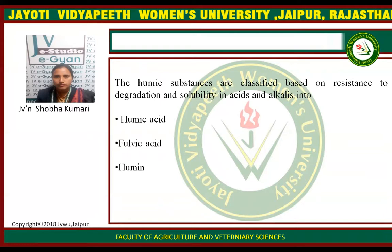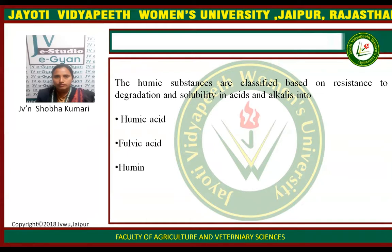Fulvic acid is the fraction of humic substances that is soluble in water under all pH conditions. It is the remaining solution after removal of humic acid by acidification. Fulvic acids are light yellow to yellow-brown in color. Humin is the fraction of humic substances that is not soluble in water at any pH value, and in alkaline conditions humin acids are lacking in color.